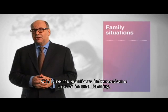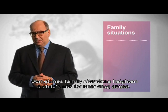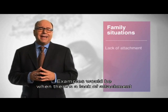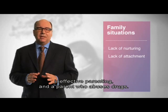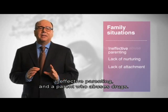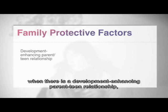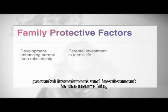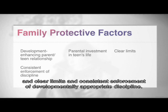Children's earliest interactions occur in the family. Sometimes family situations heighten a child's risk for later drug abuse — for example, when there is a lack of attachment and nurturing by parents or caregivers, ineffective parenting, or a parent who abuses drugs. But families can provide protection when there is a development-enhancing parent-teen relationship, parental investment and involvement in the teen's life, and clear limits with consistent enforcement of developmentally appropriate discipline.